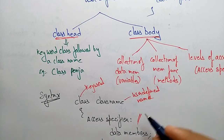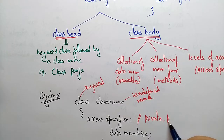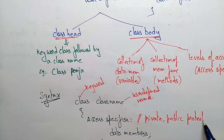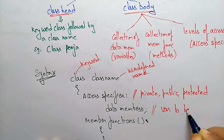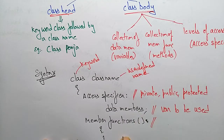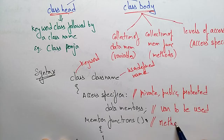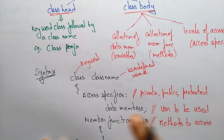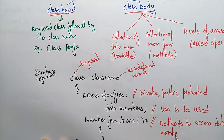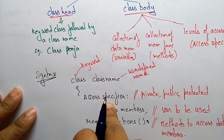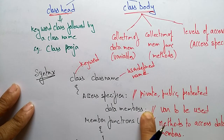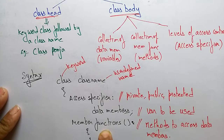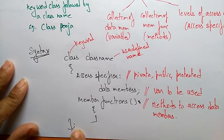The access specifiers may be private, public, or protected. The data members are nothing but the variables to be used inside the class. The member functions are the methods used to access those data members — the operations we have to perform on that particular data. The class ends with a semicolon.